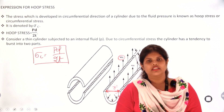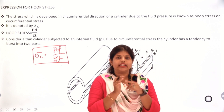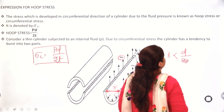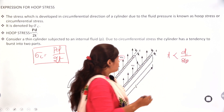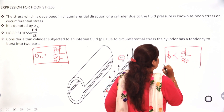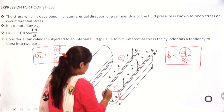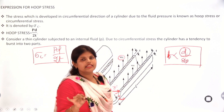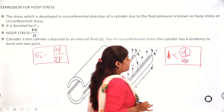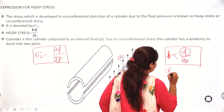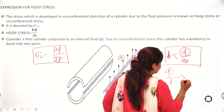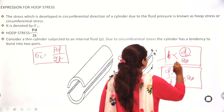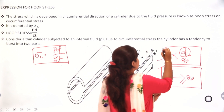In case of a thin cylinder, the thickness of the metal will be less than d by 20, where d is the internal diameter. So your thickness of the metal will be less than 1 by 20th of the internal diameter. You can also express it as DI upon T greater than or equal to 20. These types of equations normally appear in objective type questions, so we need to remember them.